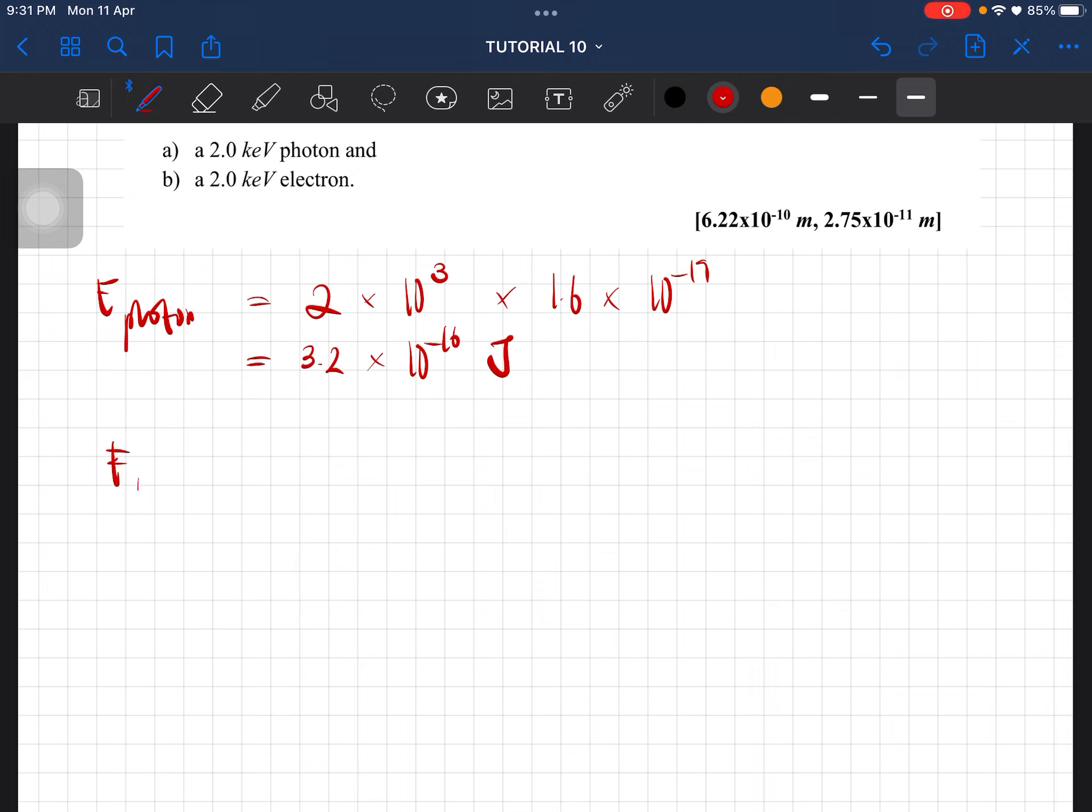And then the energy of photon is calculated using this equation, hc over lambda. So rearrange for lambda, you should get 6.63 times 10 negative 34 times 3 times 10 to the 8, which is the speed of light, divided by the energy just now.